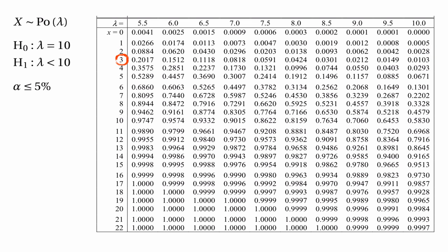3 is also inside the critical region because the probability there is 0.0103, and that's less than 5%. And 4 is inside the critical region because the probability that x is less than or equal to 4 is 0.0293, and that's less than 5%. But for x equals 5, the probability that x is less than or equal to 5 is 0.0671, which is greater than 5%, so we wouldn't end up rejecting the null hypothesis.